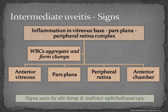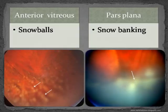Regarding the signs: there is inflammation in the vitreous base, pars plana, and peripheral retina complex. There will be exudation of WBCs and they form clumps, resulting in signs in the anterior vitreous, pars plana, and peripheral retina. To examine this, you have to use both the slit lamp as well as indirect ophthalmoscopy. Snowballs in the anterior vitreous are clumps and exudates of WBCs, specially seen in the inferior retina.